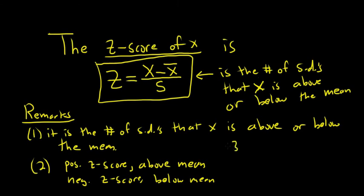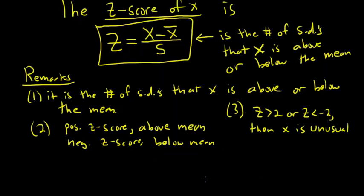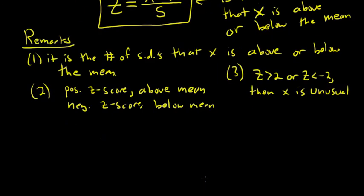And three: if your z is bigger than 2 or less than negative 2, then x is unusual. Z-scores bigger than 2 or smaller than negative 2 are considered unusual. Anything between negative 2 and 2 is okay.